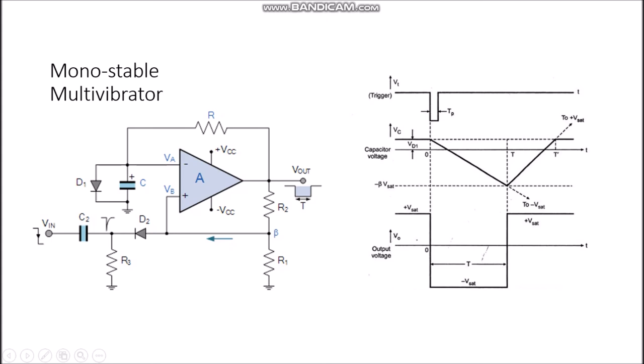As soon as the output switches to minus Vsat, the voltage at the non-inverting terminal becomes minus beta times Vsat, where beta equals R1/(R1 + R2). The capacitor now discharges from Vd toward negative voltage. As soon as the capacitor voltage becomes more negative than minus beta Vsat, the output switches from minus Vsat back to plus Vsat, returning to its stable state. The duration of this transition is the pulse width generated by applying the trigger.